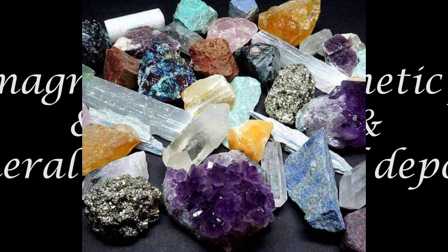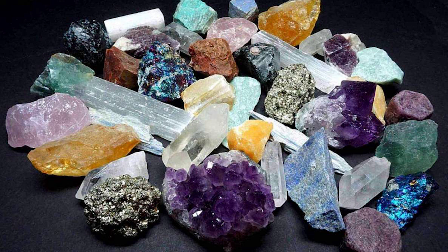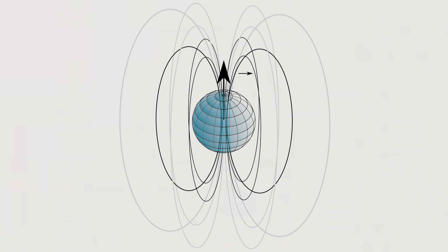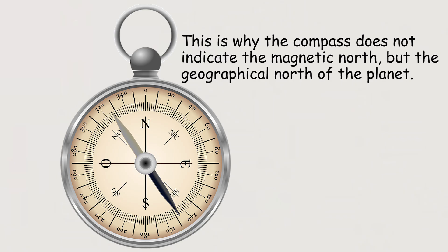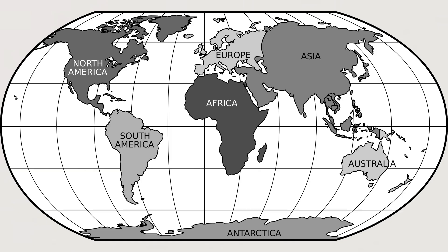Difference ten: the magnetic field and mineral deposits. Since Antarctica is a mass of land, there are many minerals — gold, silver, platinum, iron, etc. In the North Pole there are no such minerals. Regarding the Earth's magnetic poles, the North Pole's magnetic field is located in the south, while the South Pole's magnetic field is located in the north. For this reason, a compass does not indicate the magnetic north but the geographical north of the planet.